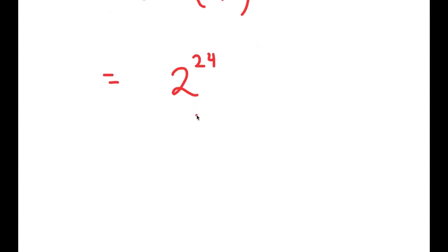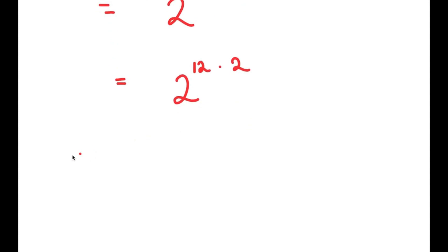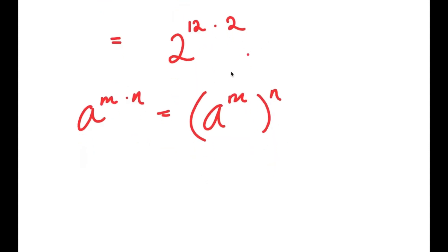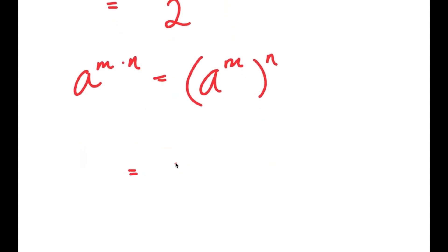From here, I'm going to write this as 2 to the power of 12 times 2. The reason I did this is because I can now use the property a to the power of m times n is equal to a to the power of m to the power of n. So 2 to the power of 12 times 2 is equal to 2 to the power of 12, to the power of 2.